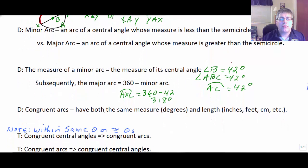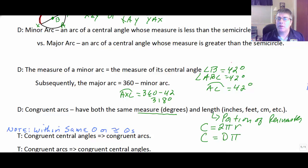Congruent arcs have both the same measure in degrees and length. And the length of an arc, that's really the portion of the perimeter. So remember that the perimeter of a circle is the circumference, calculated by 2πr, or the circumference is diameter times π.